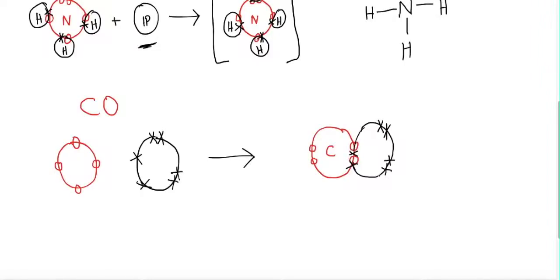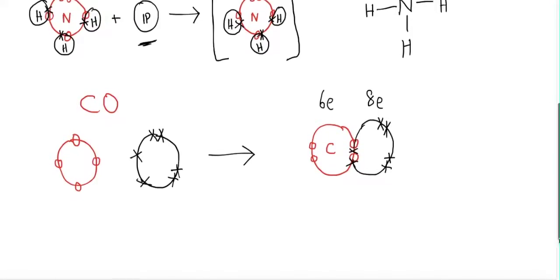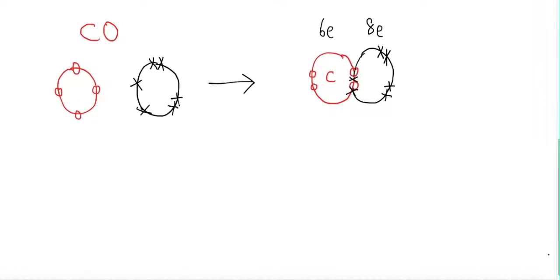Counting the electrons in each atom's outermost shell: carbon has only six electrons — it is unstable. Oxygen has eight electrons — it is stable. So this initial structure is not correct, because after bonding each atom must have eight electrons in its outermost shell.